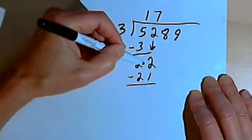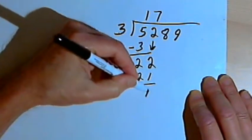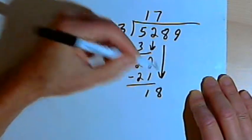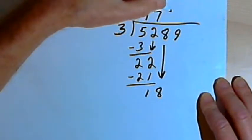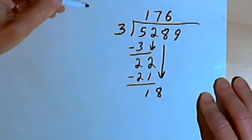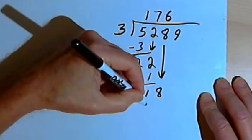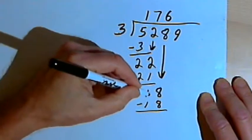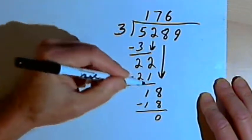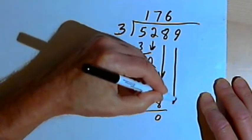Then 7 times 3 is 21. I'm subtracting. 22 minus 21 is 1. Bring down the next digit, which is an 8. 3 goes into 18, 6 times. So I'll write that 6 above the 8. 6 times 3 is 18. 18 minus 18 is 0. And I bring down the last digit, which is a 9.